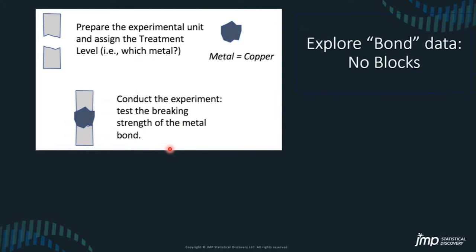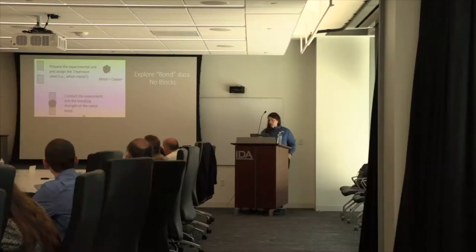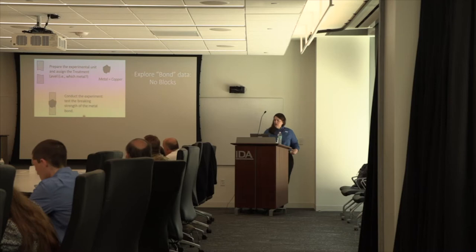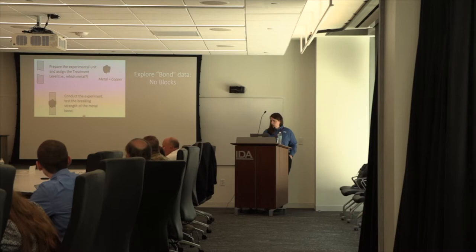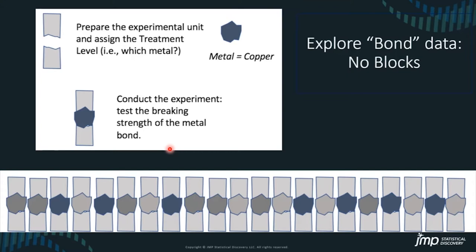We'll start with the bond data. They were taking metal ingots, breaking them apart, welding them back together, and testing the breaking strength of that metal bond. In a completely randomized design, we have 21 pieces of metal randomized to one of three different treatments. It's not a mixed model — it's just a CRD. We would go forth, analyze it, and be happy.